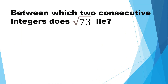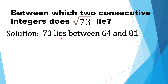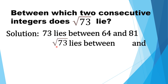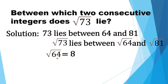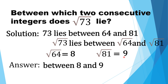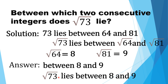Between which two consecutive integers does the square root of 73 lie? Square root of 73 lies between square root of 64 and square root of 81. Square root of 64 is equal to 8, and square root of 81 is equal to 9. Thus, square root of 73 lies between 8 and 9. Remember, 8 and 9 are two consecutive integers.